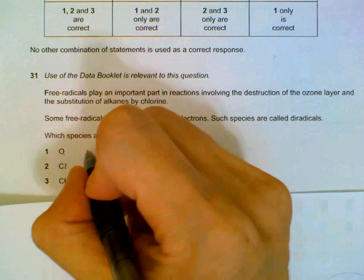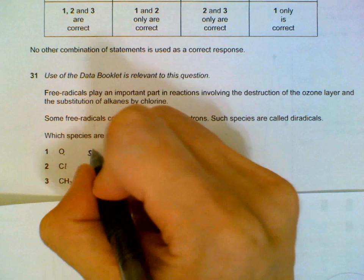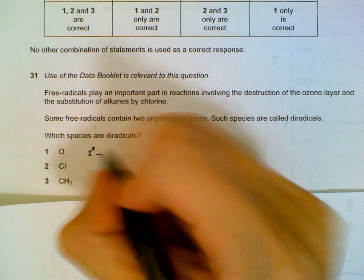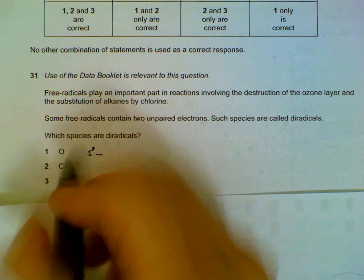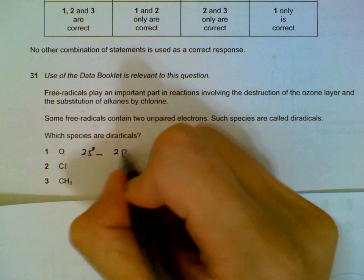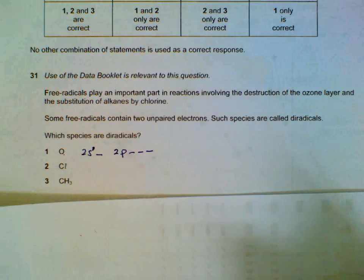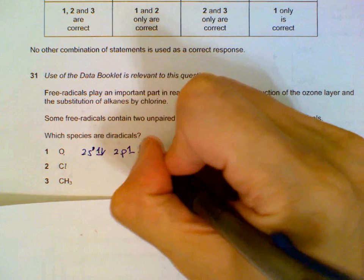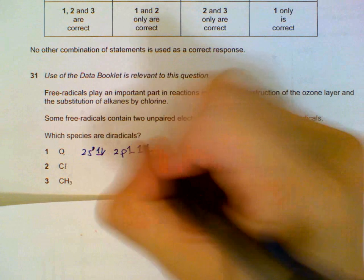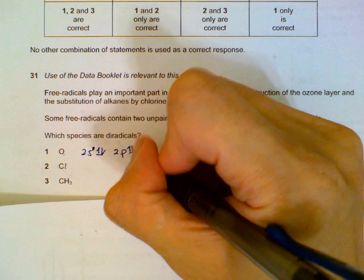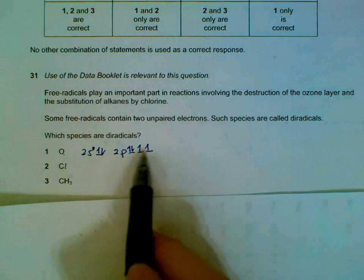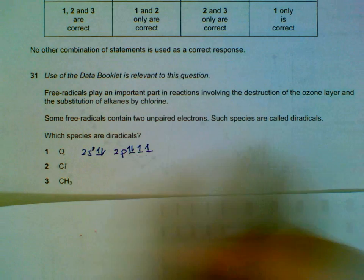Oxygen has six outer electrons in the second shell, so I'll start off with the second shell: 2s, 2p. We have three orbitals - one, two, three, four, five, six. So oxygen actually has two unpaired electrons. It is a diradical.